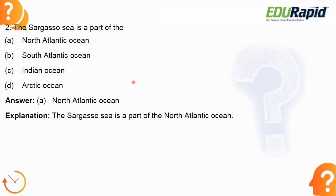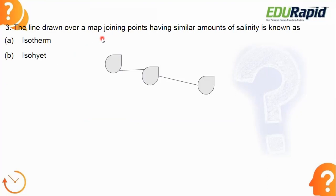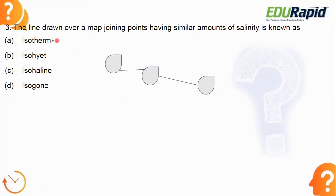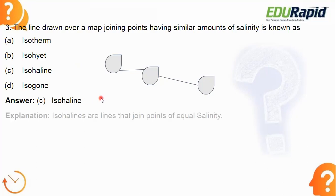Next: the line drawn over a map joining the points having similar amounts of salinity is known as what? The options are isotome, isohet, isoheline, or isogon. The answer is isoheline. Isohalines are lines that join the points of equal salinity.